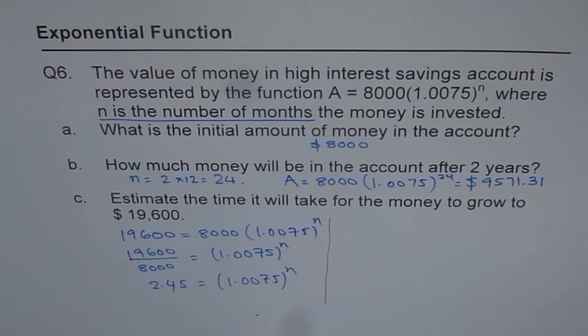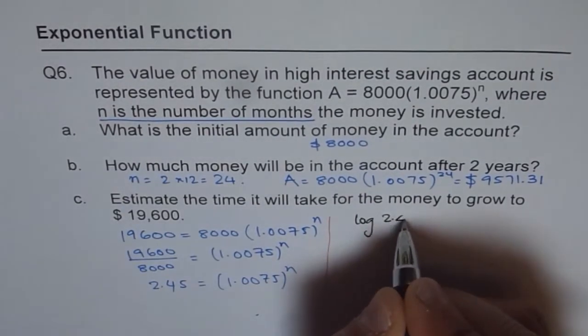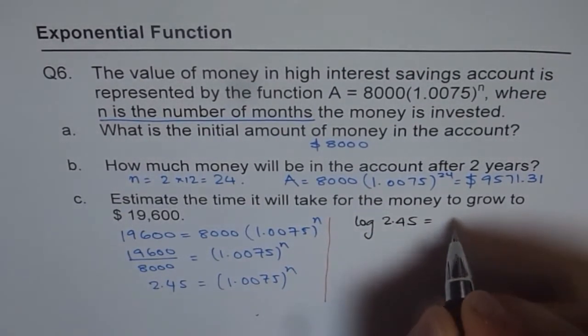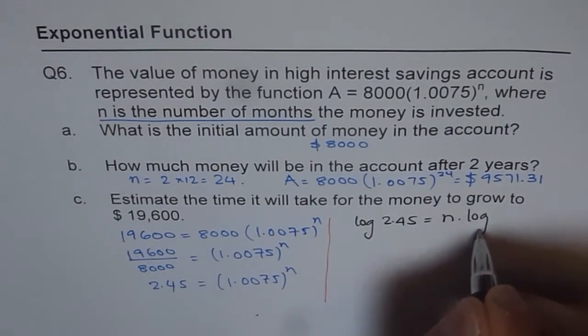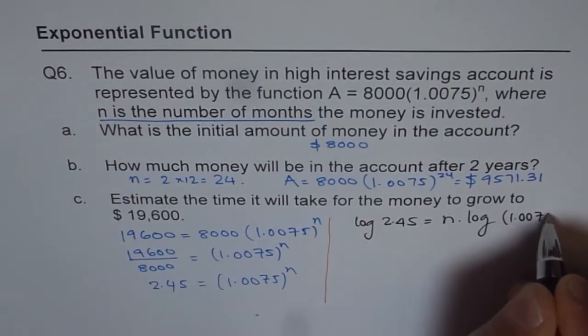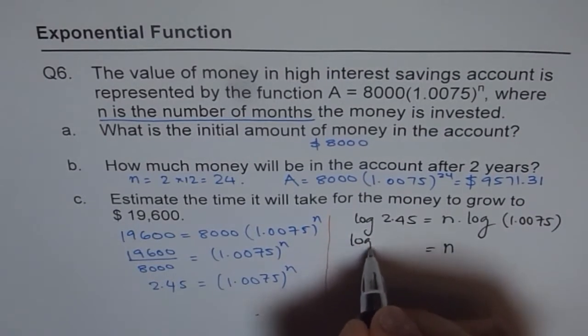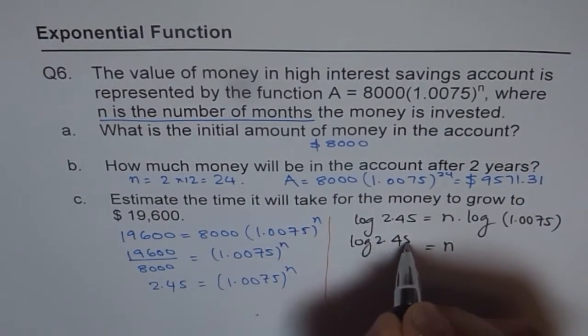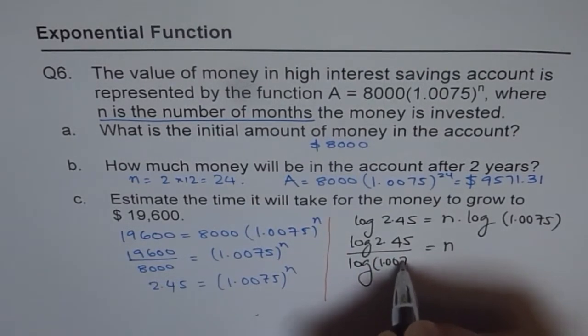The other way is to use log. Now, let me teach you how to use log. So, I am taking this opportunity to teach you log. When we take log on both sides, we get log of 2.45 equals to, when we take log, this N comes here. So, N times log of the number inside, which is 1.0075.